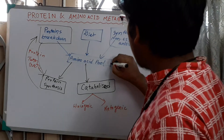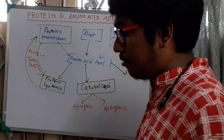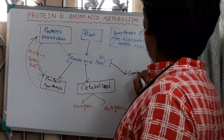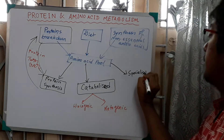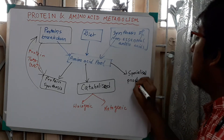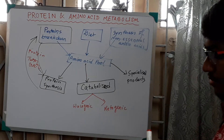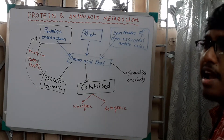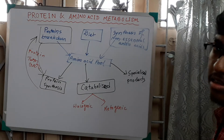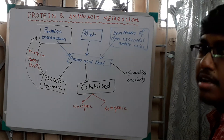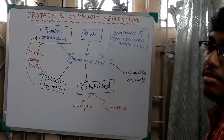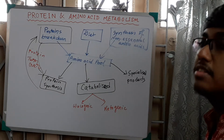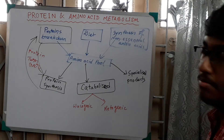Another exit pathway from the amino acid pool is the formation of specialized products — like catabolites such as adrenaline, noradrenaline, dopamine, melanin, serotonin, etc. From different amino acids, these are synthesized — I will discuss this later in the extended metabolism part.